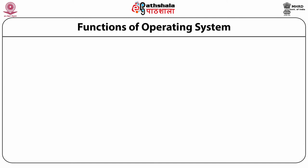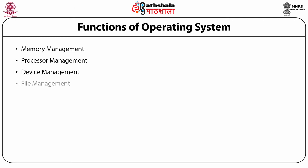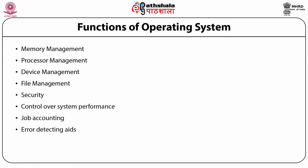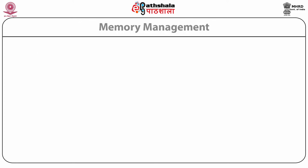Now coming to the details of functions. The functions can be mainly categorized into memory management, processor management, device management, and file management — the four main management functions. Apart from that, we have security, control over system performance, job accounting, error detecting aids, and coordination between other software and users.